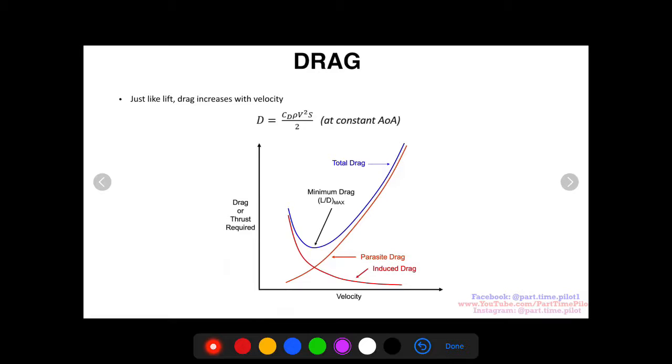Now let's take a look at this graph down here to get an idea of what we're talking about. So we have the two red lines. We have this one, which is parasite drag. As you can see, as we increase in velocity, the parasite drag increases parabolically.